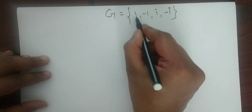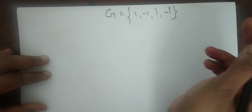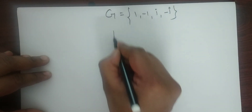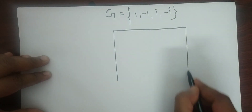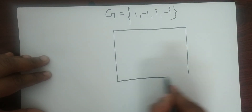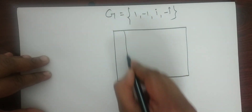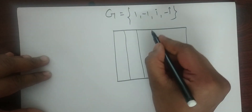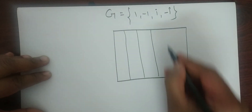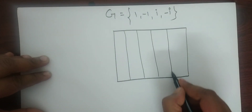G has identity 1. Now we have to find inverse elements. So for this, make a composition table. You have already learned how to make a composition table.